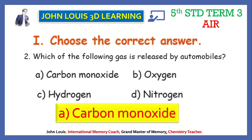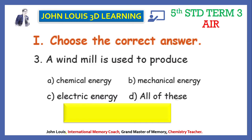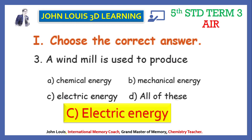Third question: a windmill is used to produce — you might have seen windmills in many places, especially near hill stations, because lots of wind blows there. Those winds rotate the windmills and produce energy. The options are A chemical energy, B mechanical energy, C electrical energy, and D all of these. We are producing electricity from windmills, therefore the answer is C — electrical energy.